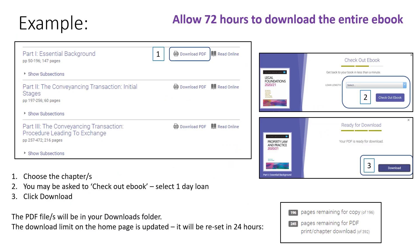This slide shows the different steps involved in downloading. First, choose the chapter or chapters from the table of contents on the home page. You may be prompted to check out the e-book — just choose the one-day loan option. It will then tell you that your document is ready to download. Click download and your file will be saved in your downloads folder. The download limit on the home page will then be updated, showing you how many more pages are available to download in that 24-hour period.